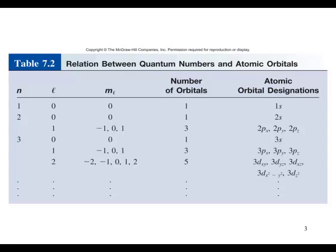Notice that when n equals one, you can only have an s orbital. When n equals two, you can have s and p orbitals. When n equals three, you can have s, p, and d orbitals.